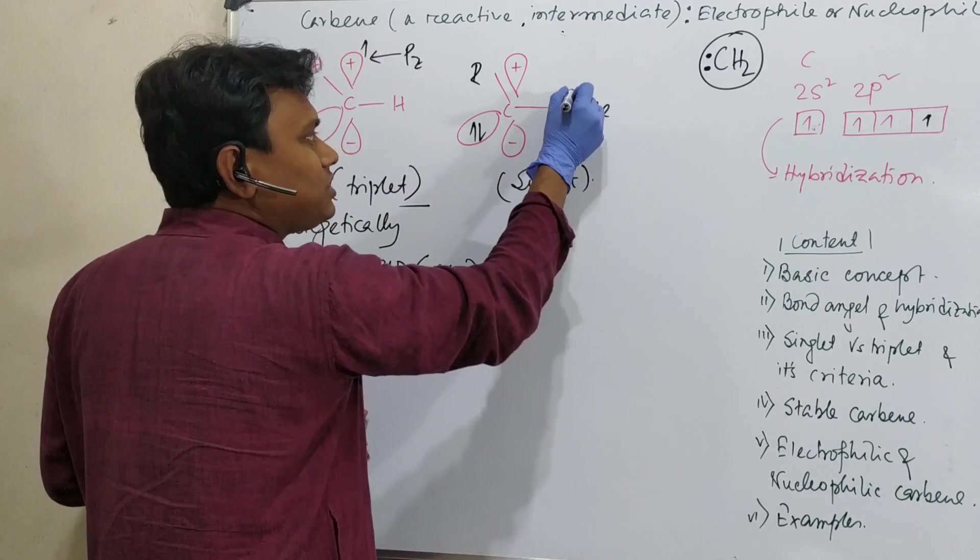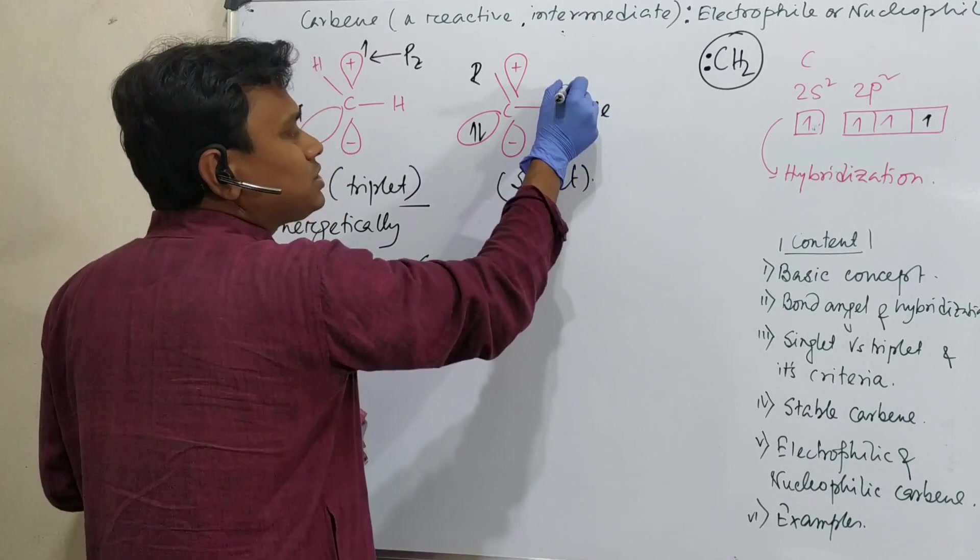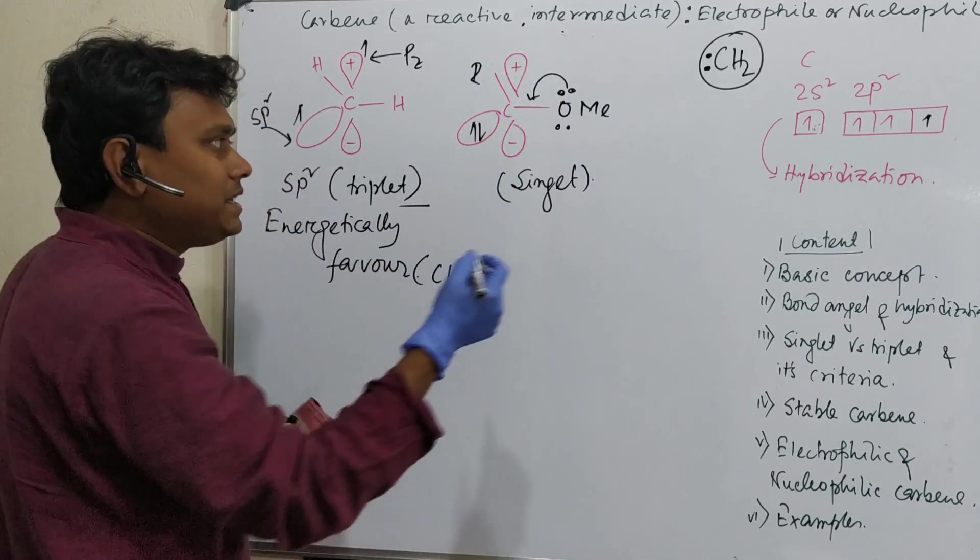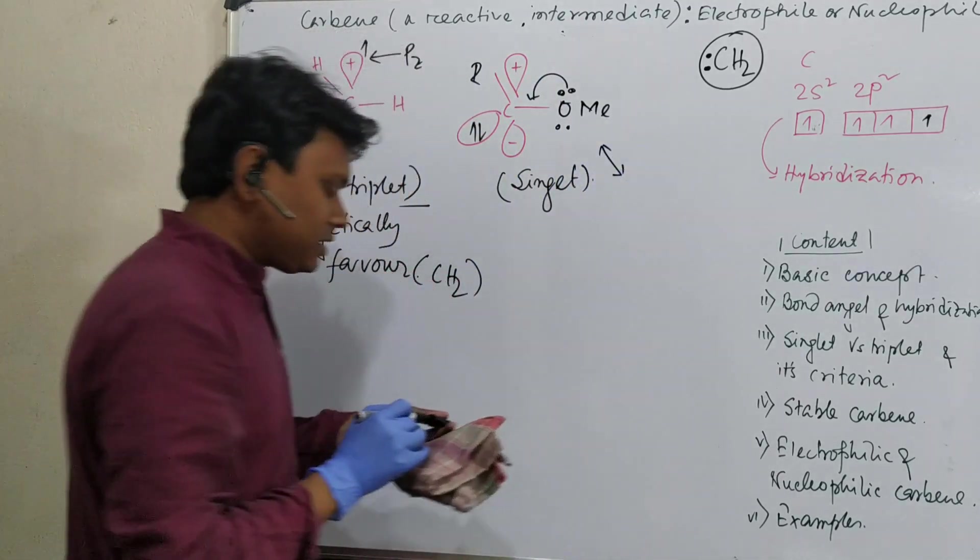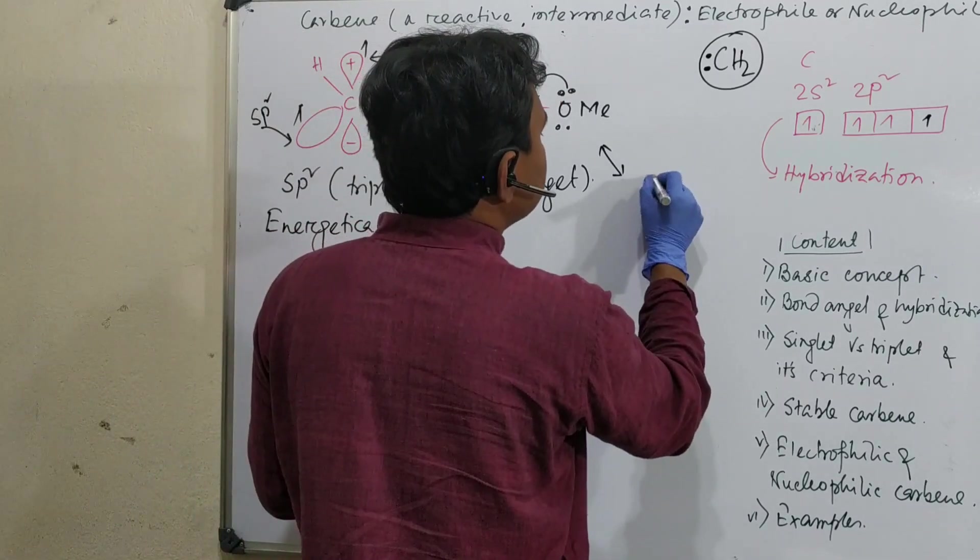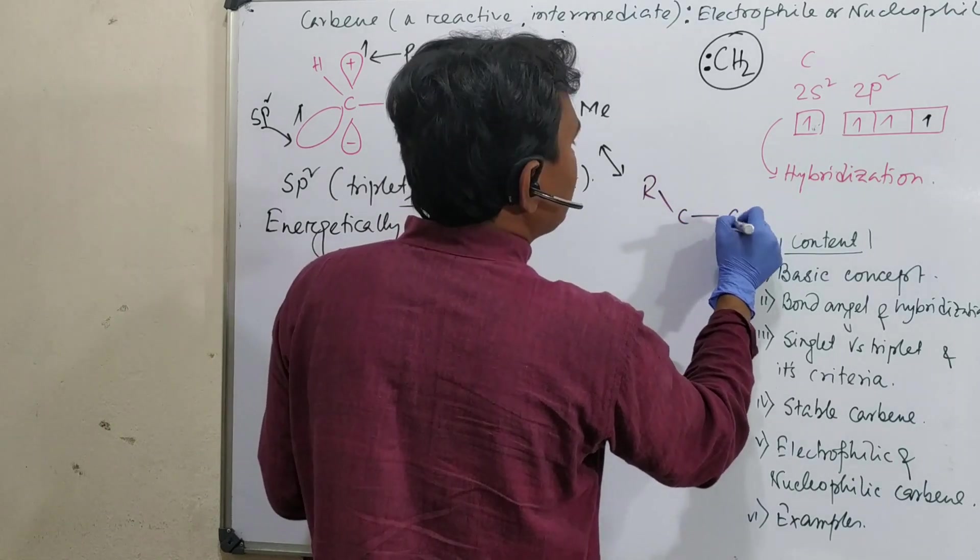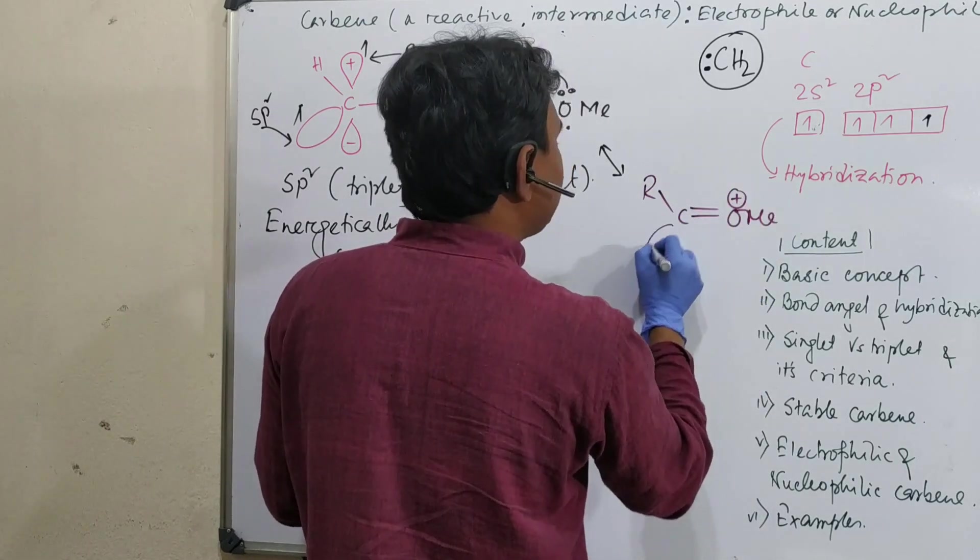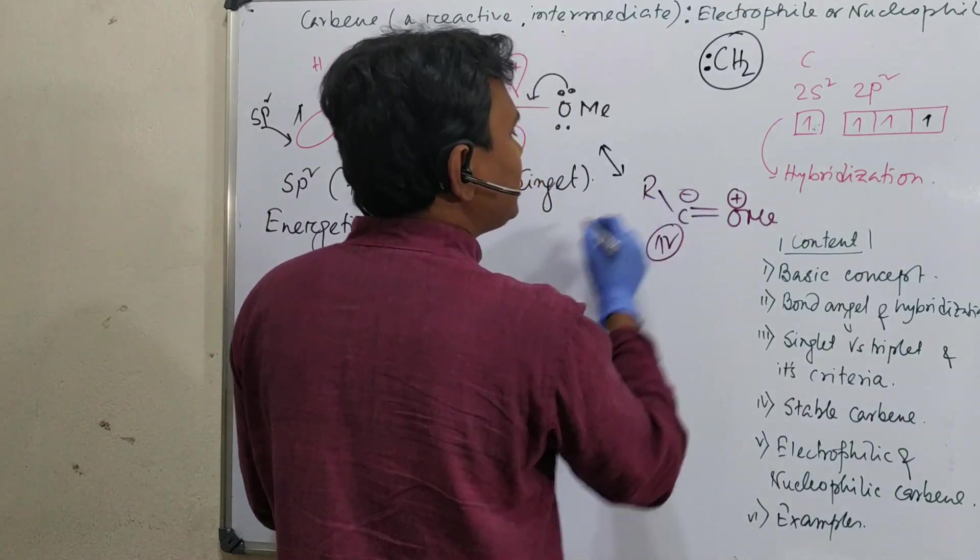Let's consider this side R and this side OMe. How can this stabilize? See, oxygen has lone pair. So this lone pair could be given to this vacant p orbital and it can form a resonant structure which looks like R-C with OMe, this having plus and this sp2 orbital having this lone pair with minus.